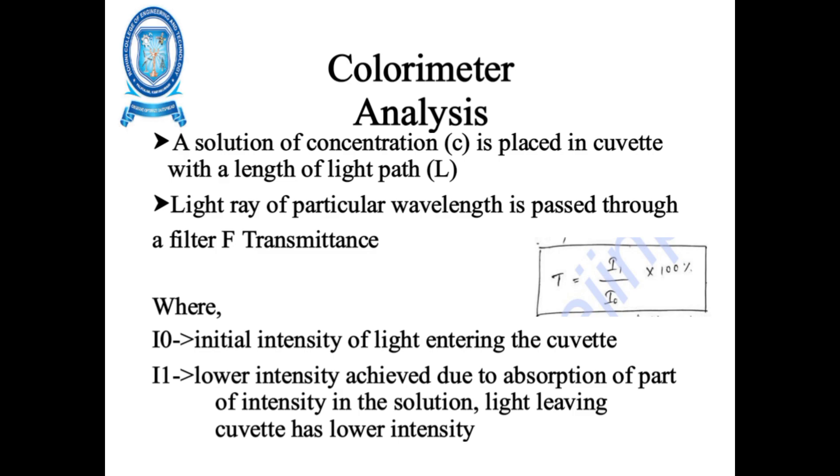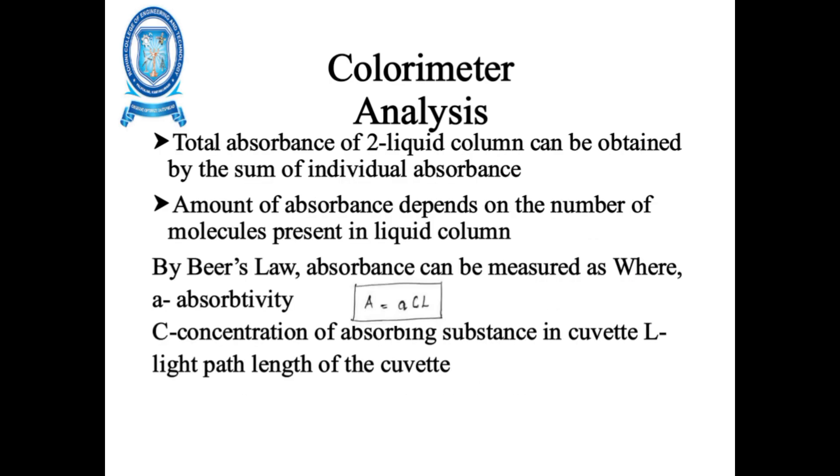A light ray of particular wavelength is passed through a filter F. Transmittance, where I0 is the initial intensity of light entering the cuvette, I1 is a lower intensity achieved due to absorption of part of intensity in the solution. The light leaving cuvette has lower intensity.